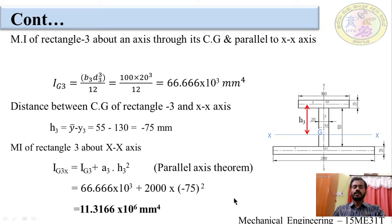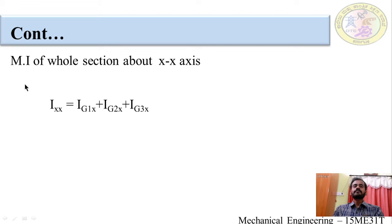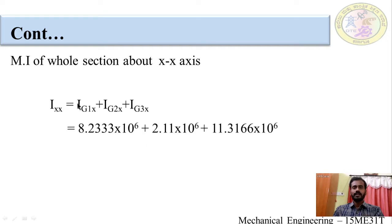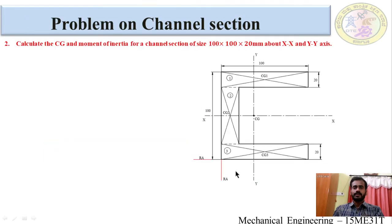We have calculated the moment of inertia of each rectangle about the XX axis. Adding them: Ixx = IG1x + IG2x + IG3x. Substituting the values, we get Ixx = 21.659 × 10⁶ mm⁴. This is the moment of inertia of the whole I-section about the XX axis. This completes the first problem.